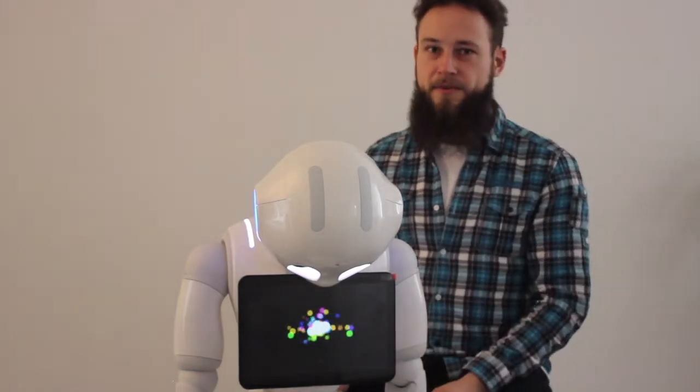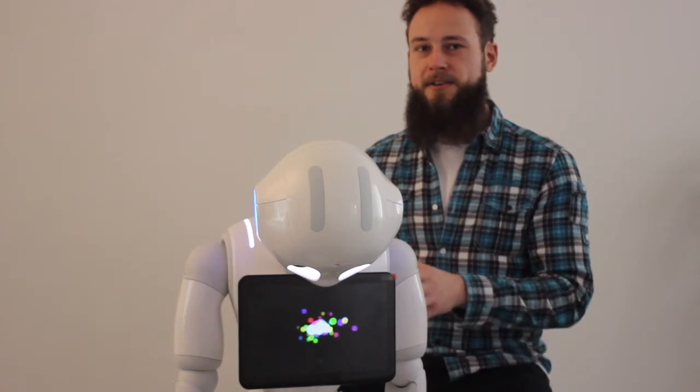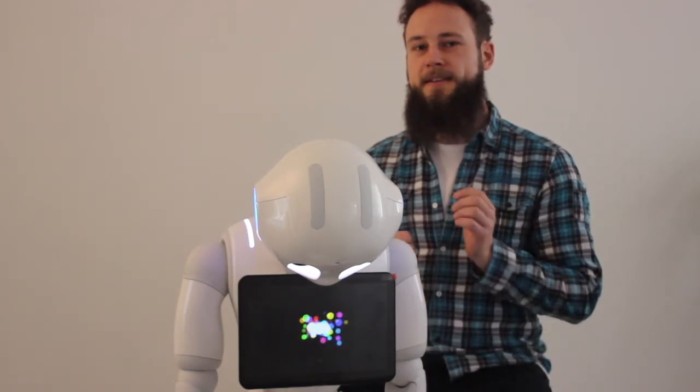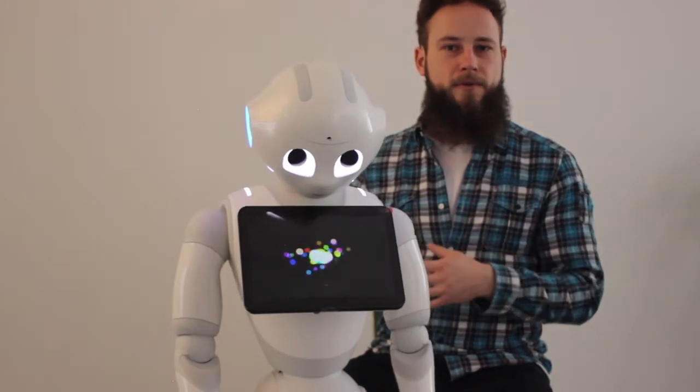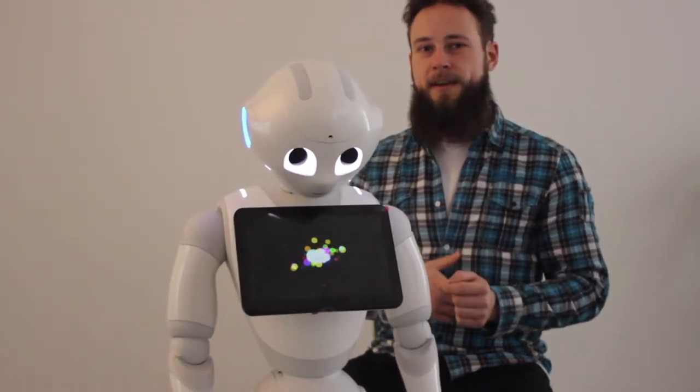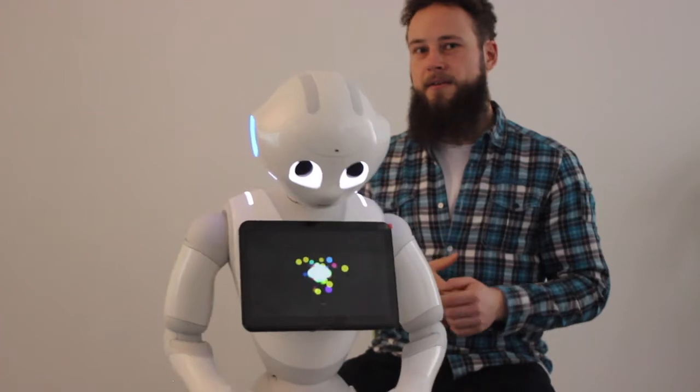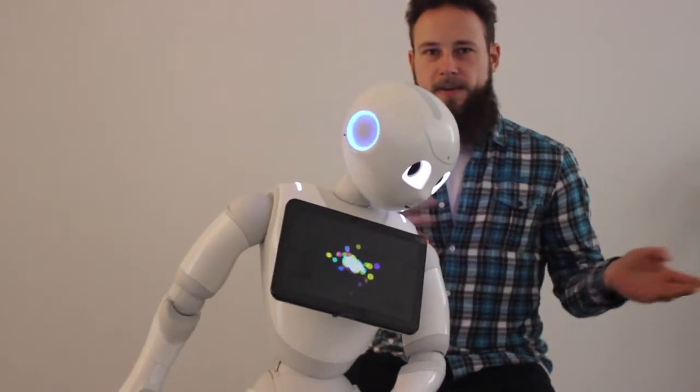If you push the button once briefly while Pepper is turned on, she will say her name, I'm Pepper so-and-so and then her IP address. If you want to use it for any kind of connection, you should write it down.